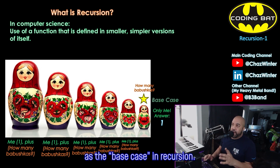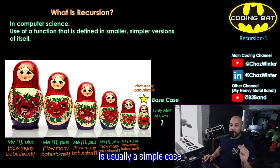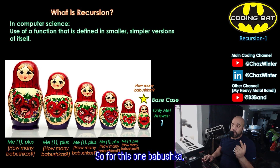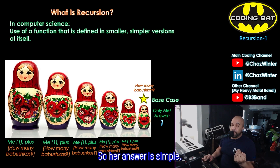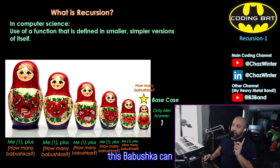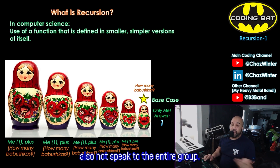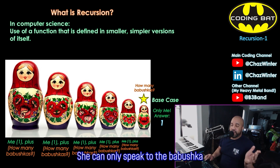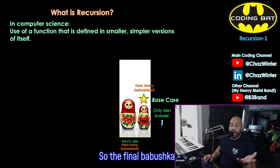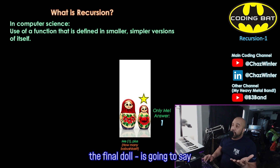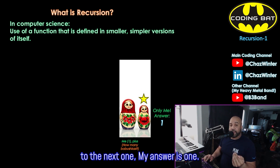So her answer is one. This is what's going to be known as the base case in recursion. The base case is usually a simple case where the answer is easily known. For this one babushka, she could see that there's nobody else next to her, so her answer is simply one. Now, this babushka can also not speak to the entire group — she can only speak to the babushka who asked her the question. So the final doll is going to say to the next one: my answer is one.